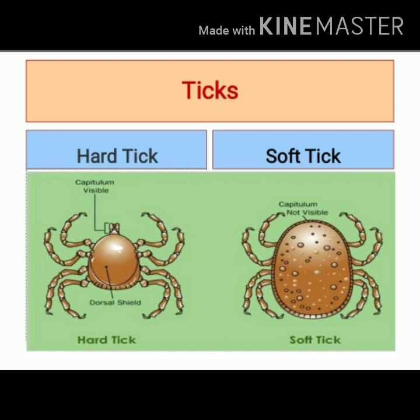In this slide, you can see hard ticks and soft ticks. If you observe carefully, you can see the head part of the hard ticks. The head part is also known as the capitulum. This is visible at the anterior end of hard ticks. Whereas the head part, or capitulum, is not visible in soft ticks.